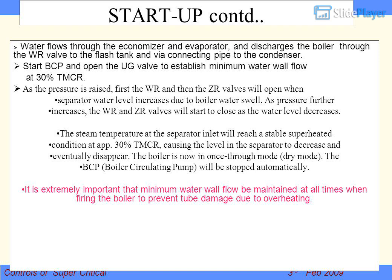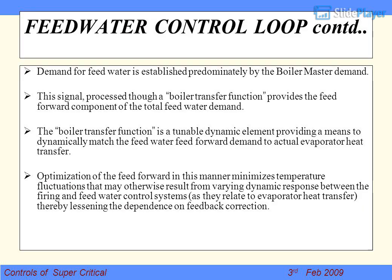It is extremely important that minimum water wall flow be maintained at all times when firing the boiler, to prevent tube damage due to overheating. Demand for feed water is established predominantly by the boiler master demand. This signal, processed through a boiler transfer function, provides the feed forward component of the total feed water demand. The boiler transfer function is a tunable dynamic element providing a means to dynamically match the feed water feed forward demand to actual evaporator heat transfer. Optimization of the feed forward minimizes temperature fluctuations that may otherwise result from varying dynamic response between the firing and feed water control systems as they relate to evaporator heat transfer, thereby lessening the dependence on feedback correction.